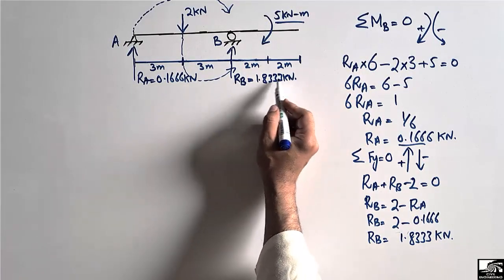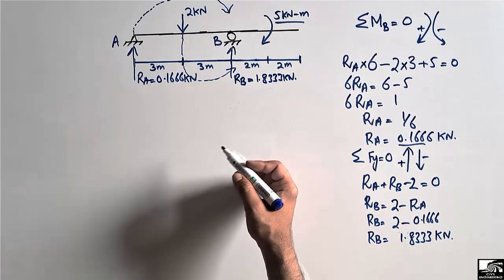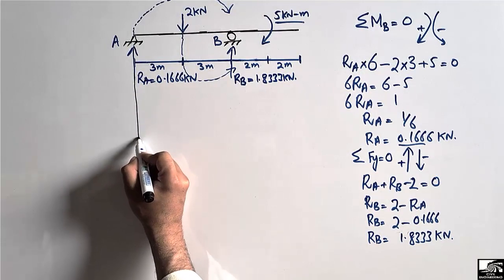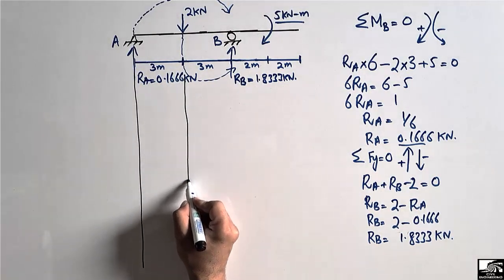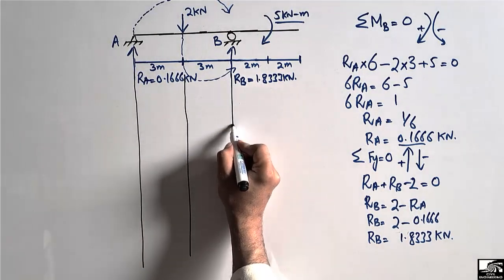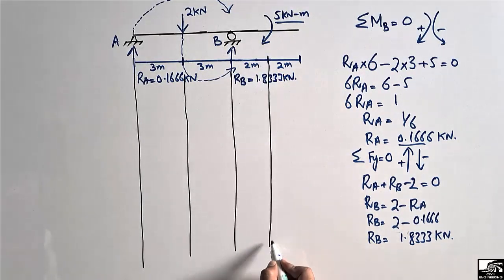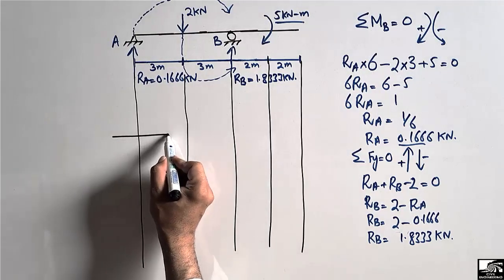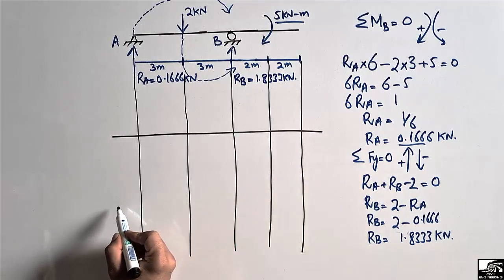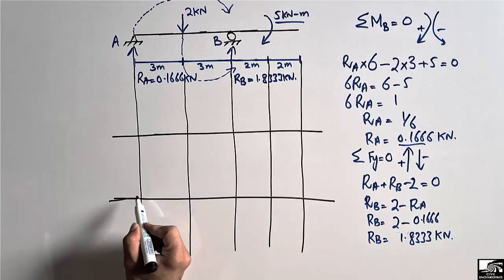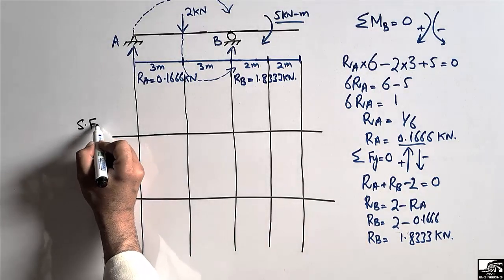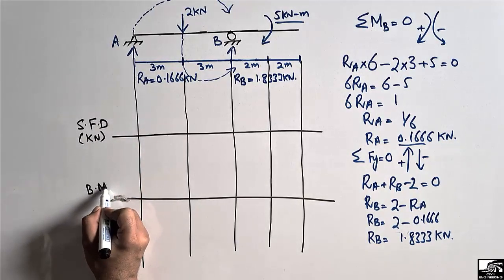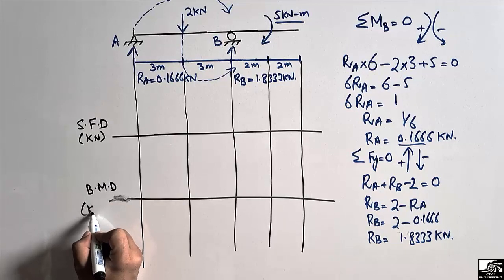These are our support reactions. Now to draw the shear force and bending moment diagram, we consider the reference lines. The shear force diagram is plotted in units of kN and the bending moment diagram is in units of kNm.